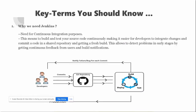Moving on, here are some key terms you should be aware of while preparing for this exam. First: why do we need Jenkins? Jenkins is needed for the continuous integration process — to build and test your source code continuously whenever you integrate changes into a shared repository such as Bitbucket, GitLab, Git, or GitHub. This is needed because it allows you to identify problems at an earlier stage through continuous feedback and build notifications when a build fails.